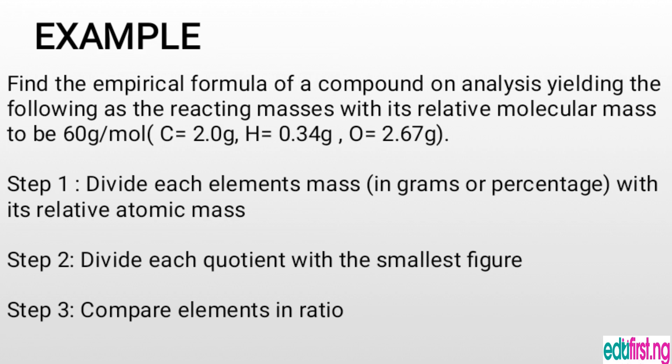Let's move on to a worked example. Find the empirical formula of a compound which on analysis yields the following masses: the mass of carbon is 2 grams, that of hydrogen is 0.34 grams, and that of oxygen is 2.67 grams. The first thing you do is write out your elements: we have carbon, hydrogen, and oxygen.